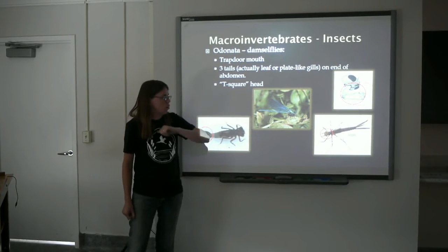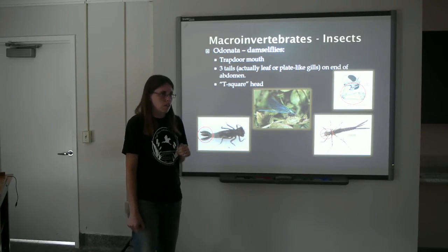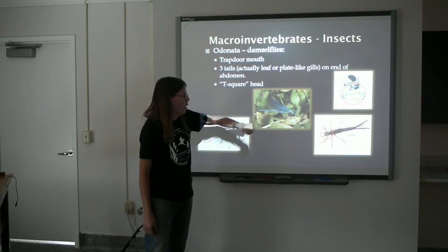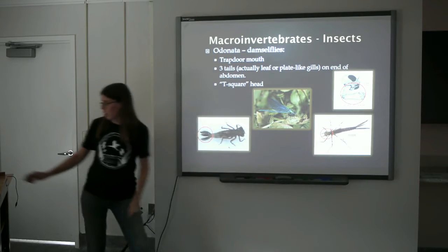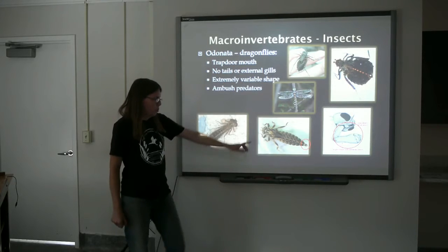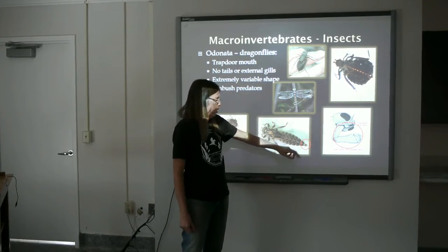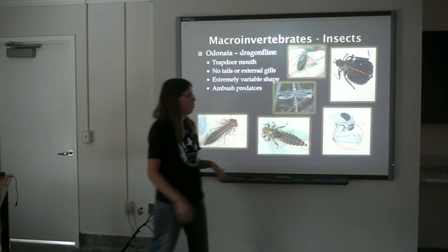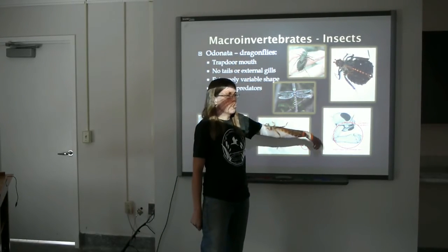Here in the center is an adult damselfly. To tell adult damselflies and dragonflies apart: when at rest, the adult damselfly holds its wings up on its back, while the dragonfly will hold its wings out parallel with the ground. Here's the dragonfly for comparison. Remember, the damselfly had three tail filaments that were actually gills. The dragonfly will usually have three small spikes, but not extended filaments. Again, the trapdoor mouth, just like the damselfly.